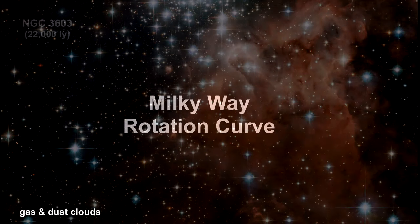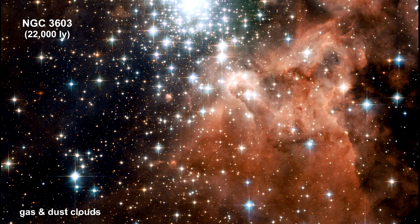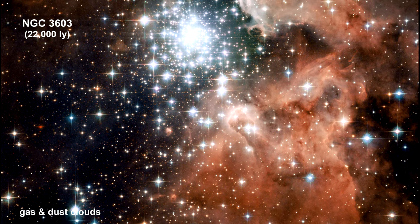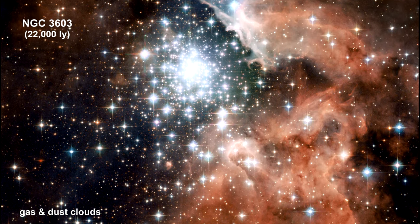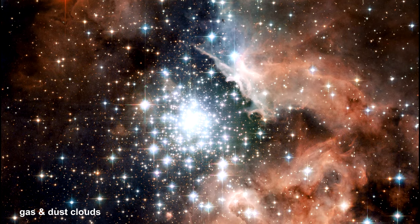The best way to map out the rotation curve for the galaxy's disk is to measure the orbital velocities and distances of gas clouds and star-forming regions across the galaxy.